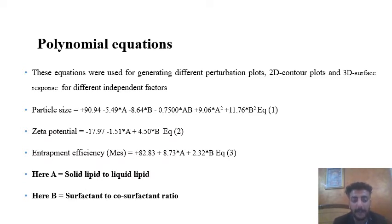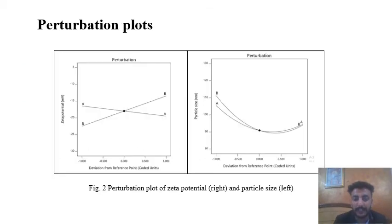For entrapment efficiency, the negative sign with the factor means whenever there is an increase in GMS to capryol ratio, entrapment efficiency of quercetin is increasing. Factor A is solid lipid to liquid lipid and factor B is surfactant to quercetin ratio.